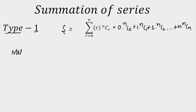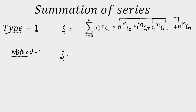Method 1: whenever the coefficients of the binomial coefficients are in AP — as you can see 0, 1, 2, 3 and so on till n — reverse the sequence and add. So write the sequence again: 0·nC0 + 1·nC1 + 2·nC2 + … + n·nCn, and the reversed version: n·nCn + (n-1)·nC(n-1) + … + 0·nC0.